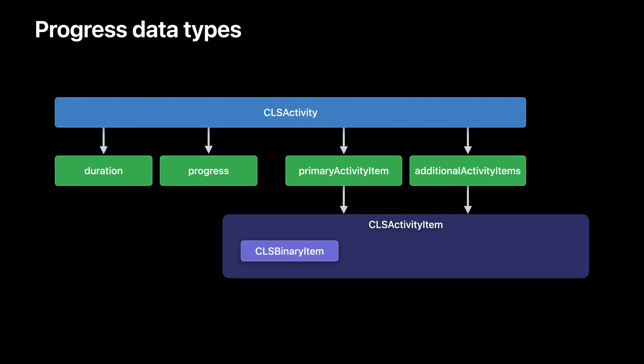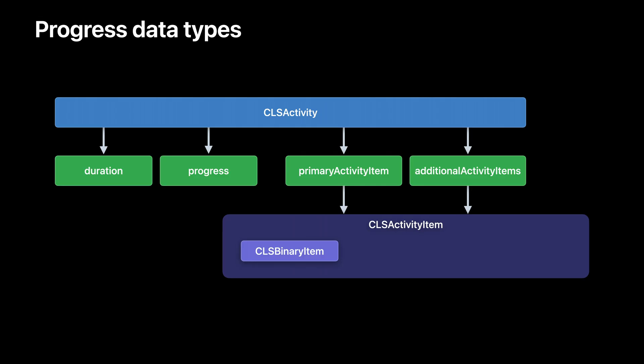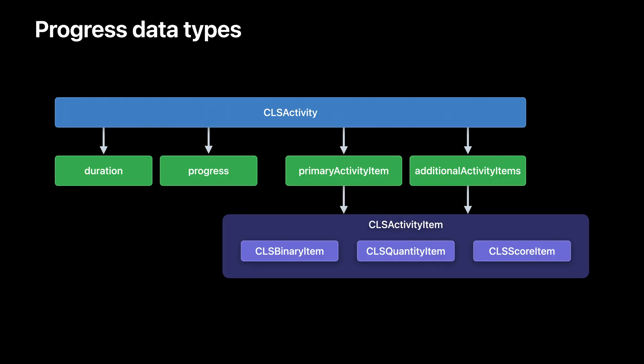The primary activity item and additional activity item properties hold a reference to one of our three subclasses of CLS activity item. First, we have CLS binary item — this is used to represent any binary data type, for example a question on a quiz where the student got it correct or incorrect. Or you can add CLS quantity item, which is used for any generic numerical value — you could use this for the number of pages, number of slides, or the total word count on a document. And the last is CLS score item, used for anything that can be represented as a part out of a total, for example a score on a quiz: the user got 8 out of 10. You can add any combination of the subclasses to an activity.